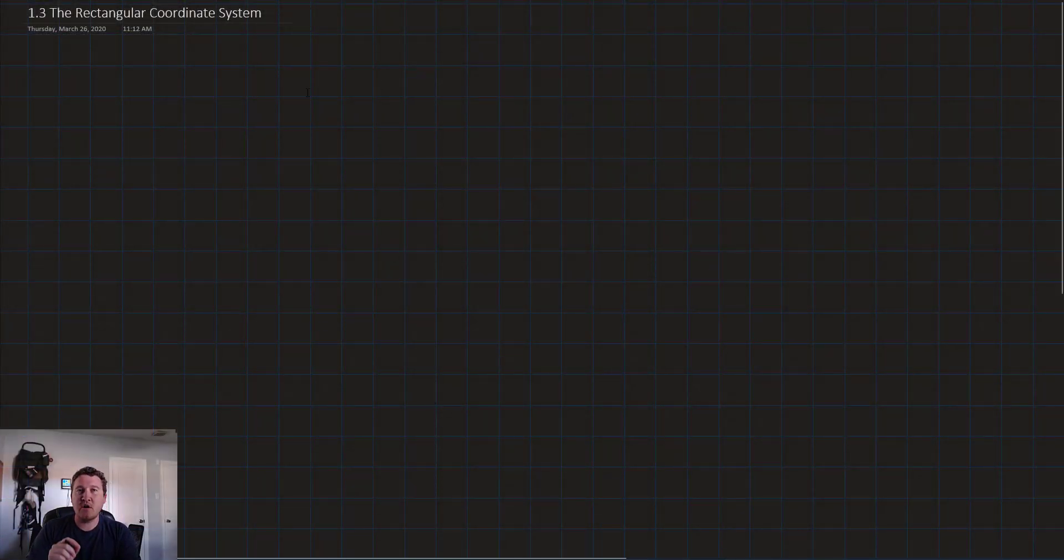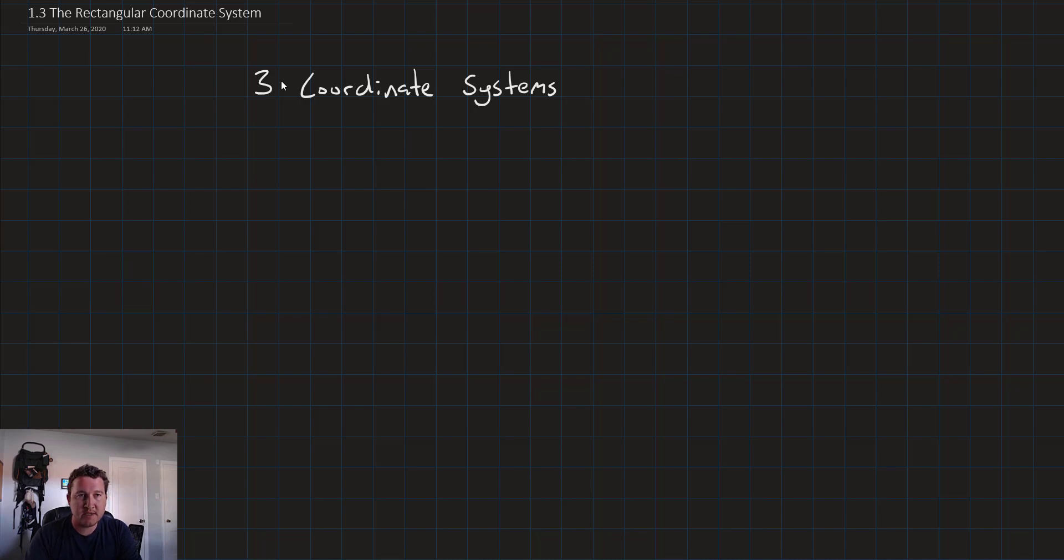Hello, and welcome to this lesson on the rectangular coordinate system. In these lessons, there are three main coordinate systems that we're going to work with. The first is called the rectangular coordinate system. It's also called the Cartesian coordinate system, and it's the one that you're probably most familiar with.